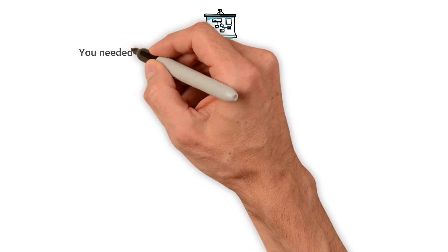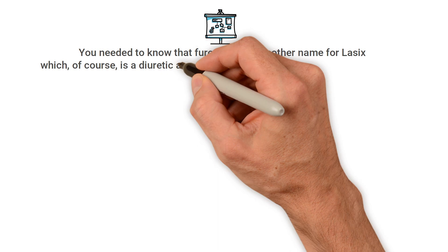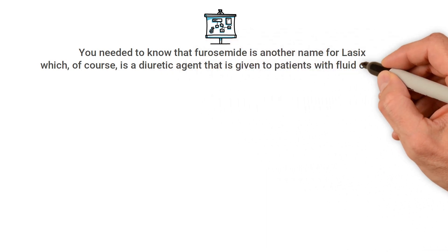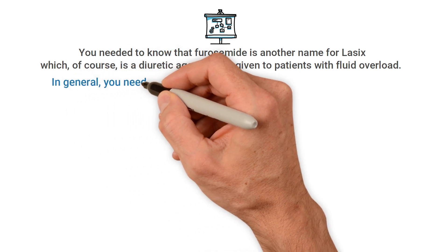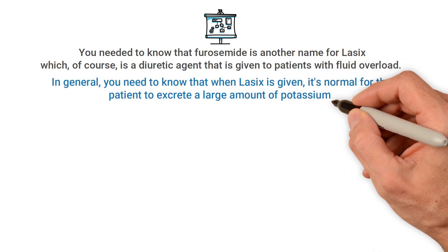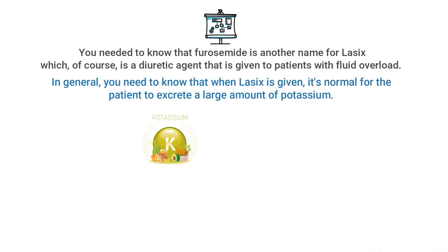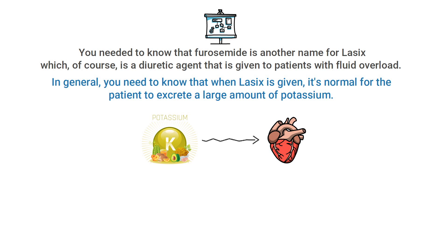First and foremost, you needed to know that furosemide is another name for Lasix, which is a diuretic agent given to patients with fluid overload. In general, when Lasix or any diuretic agent is given, it's normal for the patient to excrete a large amount of potassium. Remember that potassium levels are associated with the heart, so this explains why the patient has a new arrhythmia.